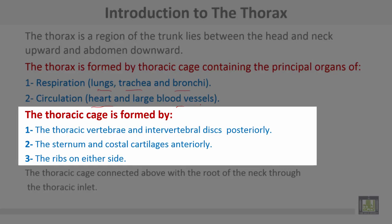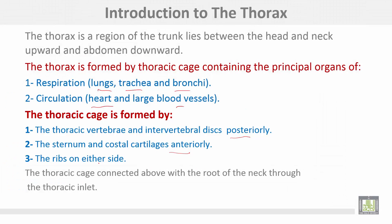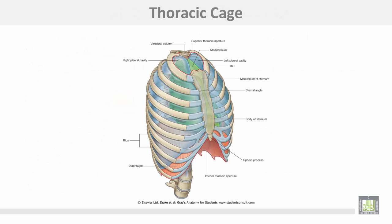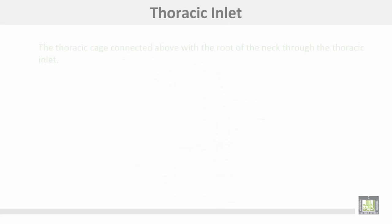The thoracic cage is formed by the thoracic vertebrae and intervertebral discs posteriorly, the sternum and costal cartilages anteriorly, and ribs on either side. The thoracic cage is connected above with the root of the neck through the thoracic inlet, and below the thoracic outlet is closed by the diaphragm.